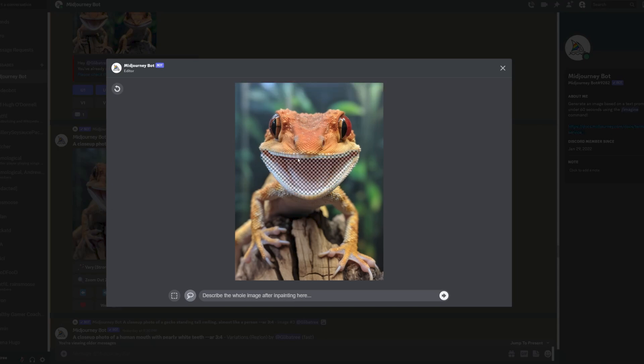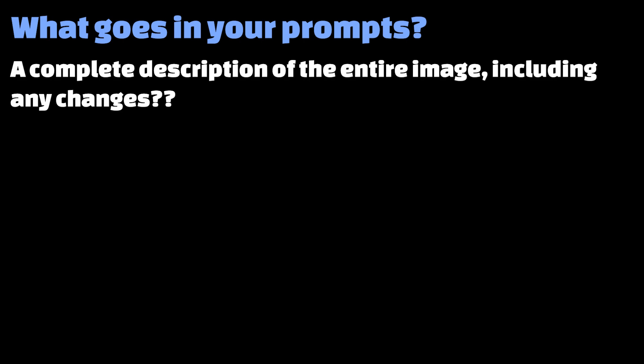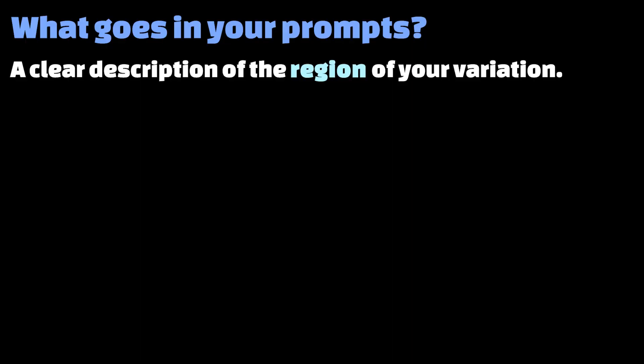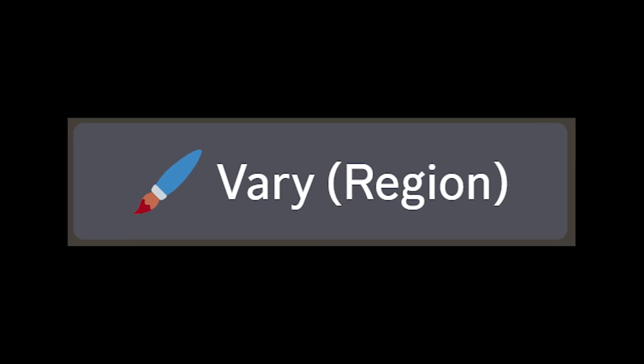But now let's slow down, because it's here where we get to the complicated part. If you've done in-painting with other tools or other models before, you know there are a few different ways this can work. The most important question you should be thinking is: what is your prompt actually supposed to include? Are you supposed to describe the new image in its entirety? For Midjourney, what you have to do is write a prompt that describes what they call the region of your variation — thus the title of the new button, Vary Region.